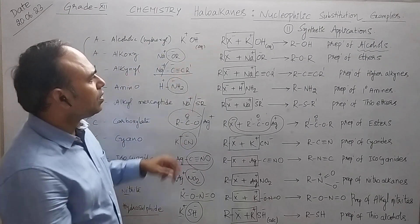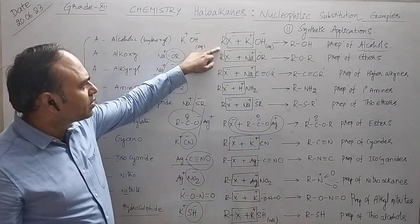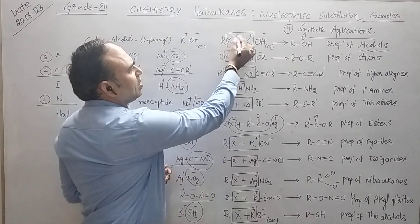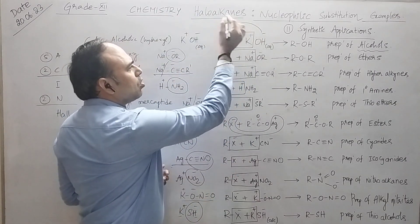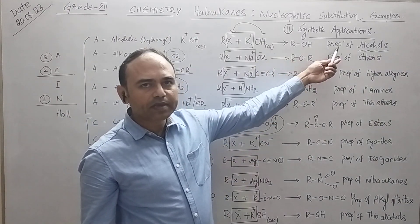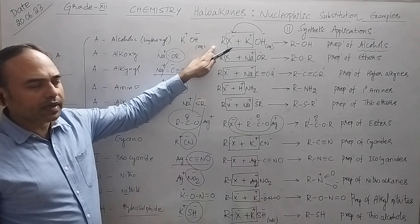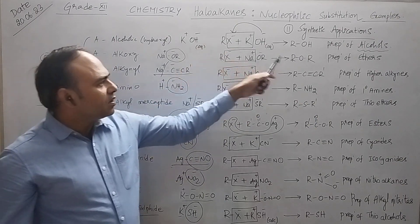I have written all the 11 general equations, and here you are having the applications of that. The first one: here we have haloalkane represented by RX, so X minus is being substituted by OH minus, so you will get alcohols. This is the first application: you can prepare alcohol using haloalkane.